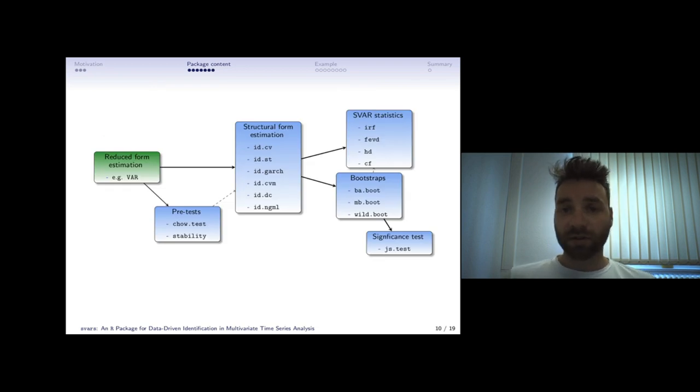What you see here is a flowchart on how to use the functions. This green box represents the function from outside our package. This is the reduced form estimation, in this example the var function from the vars package. You run your reduced form estimation, get the object, and might pass it to one of these structural form estimations.